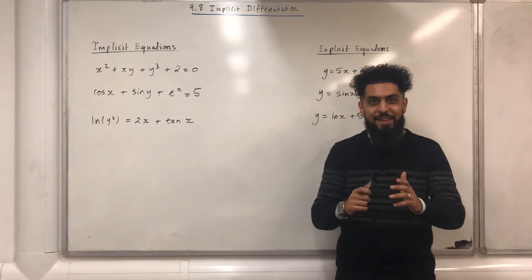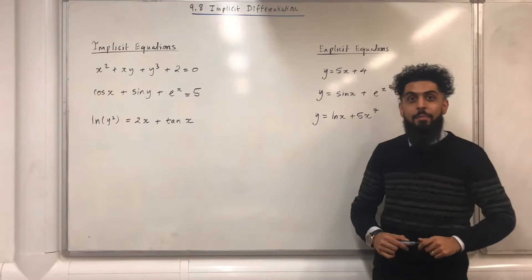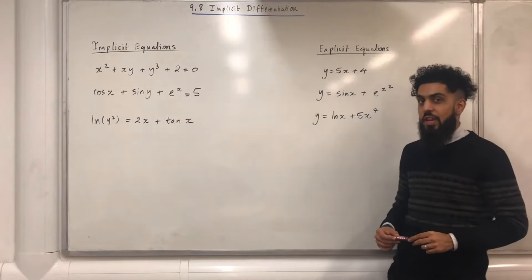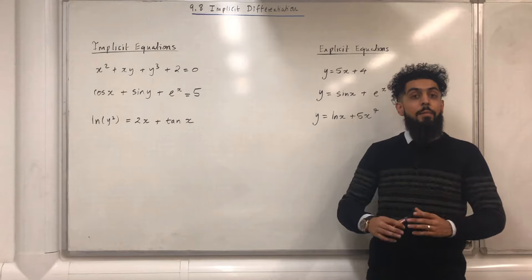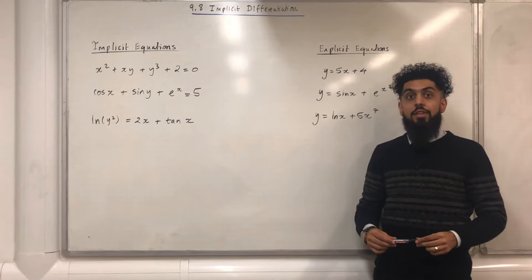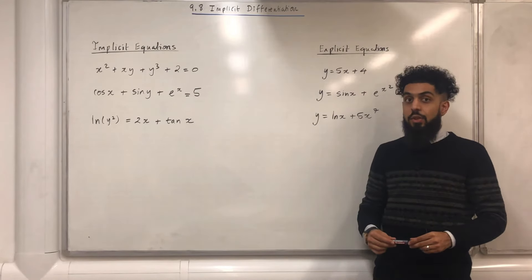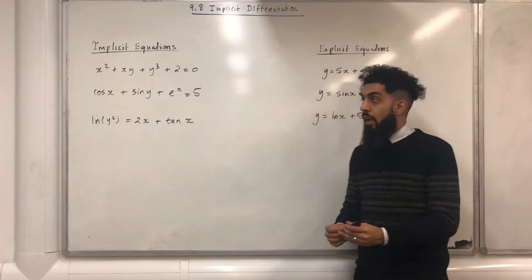Welcome back guys. In this video I will be looking at 9.8 implicit differentiation. 9.8 represents chapter 9, section 8 of the Pearson A-level Maths Pure Maths Year 2 textbook.